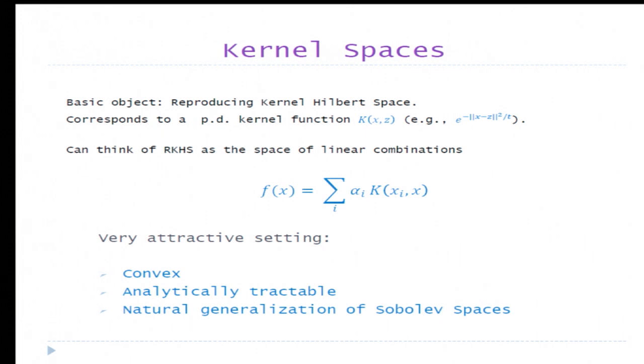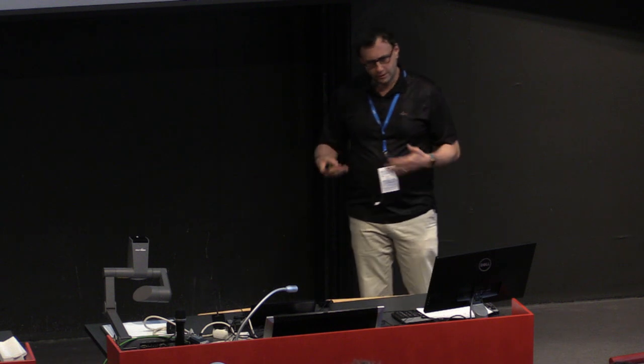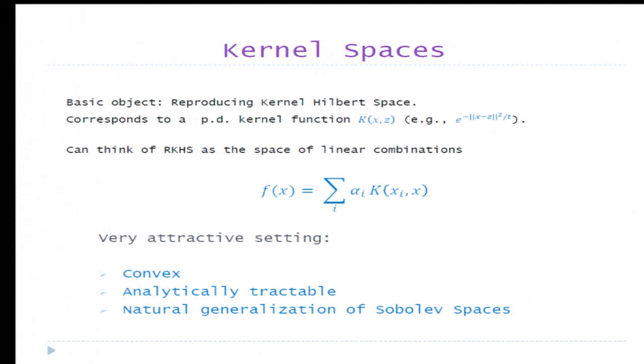As everybody probably knows, in kernel learning we have an underlying object which is a reproducing kernel Hilbert space, and that corresponds to a positive definite kernel, such as a Gaussian kernel. You can think of it as a space of all linear combinations of these kernels. This is usually a very rich space with interesting properties. In particular, algorithms which you get from kernel machines are typically convex, work well in practice, and are analytically tractable. One property which is perhaps not widely known is that kernel spaces are a natural generalization of Sobolev spaces.